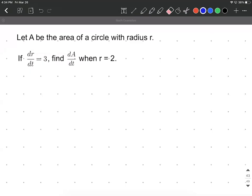Okay, on this example we're going to let A be the area of a circle and the radius is going to be represented by r. So we're given a little bit of information about this. We're given that